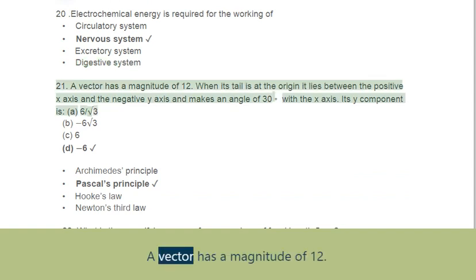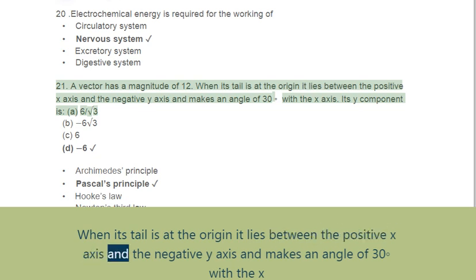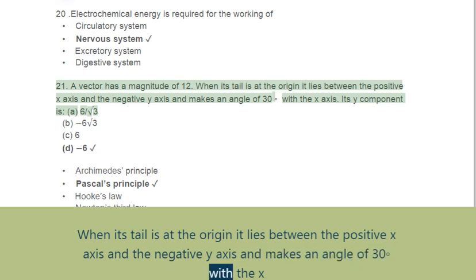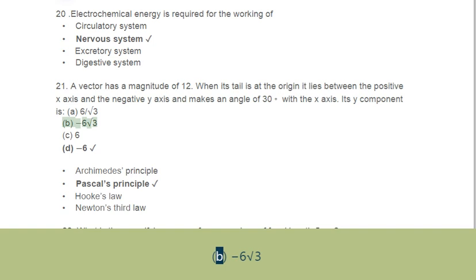Question 21: A vector has a magnitude of 12. When its tail is at the origin, it lies between the positive x-axis and the negative y-axis and makes an angle of 30° with the x-axis. Its y-component is. Options: A. -6√3, B. 6√3, C. 6, D. -6.